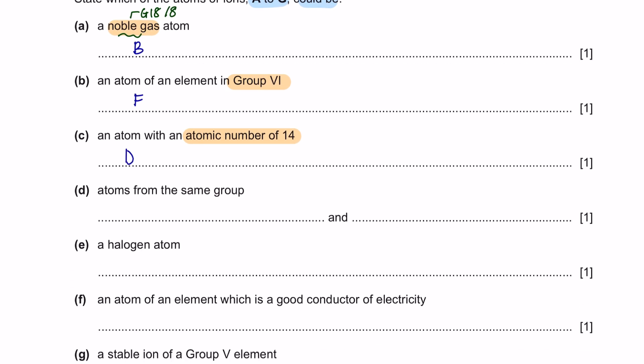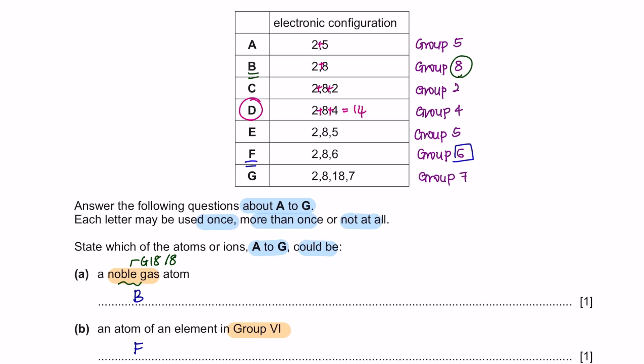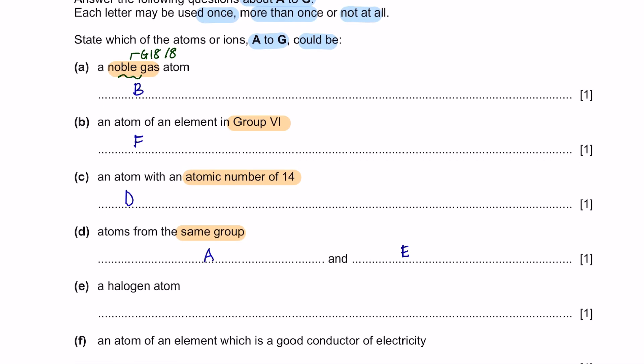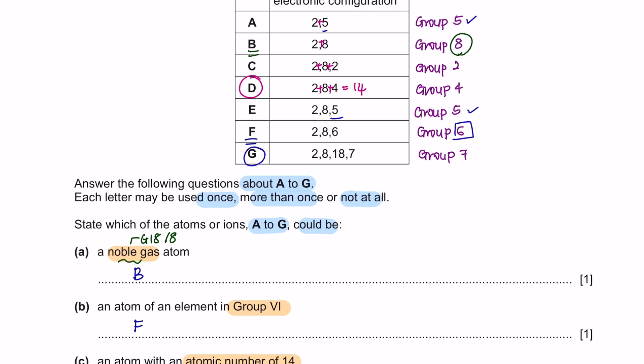Question D: atoms from the same group. Same group means they have the same valence electron, and we've got 5 and 5 both on A and E, so the answer is A and E. Next, question E: a halogen atom. A halogen atom is from group 17 or known as group 7, which is atom G.